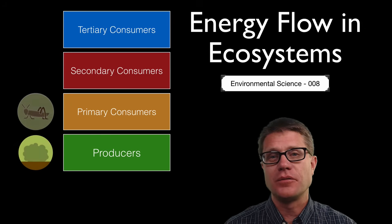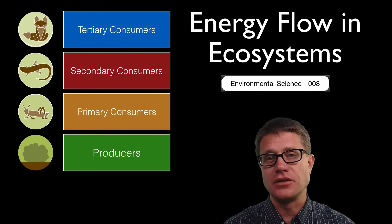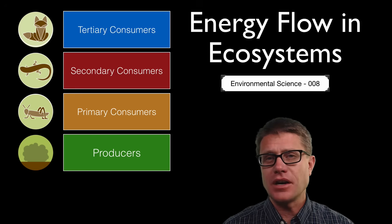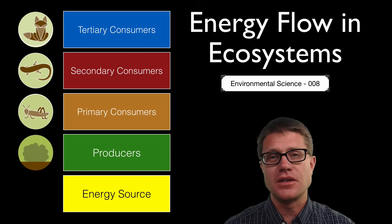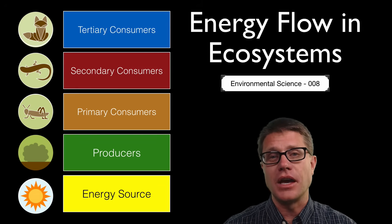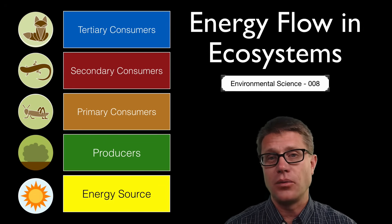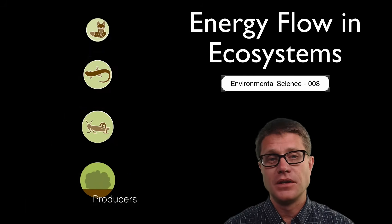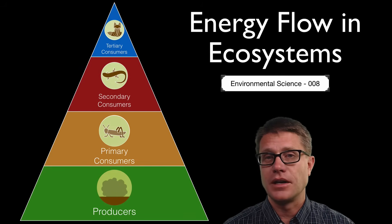In the last video we talked about the importance of producers producing food that is consumed by consumers. But we did not talk about where that energy comes from. What is the major energy source on our planet? It is going to be the sun. And this model also does not show that we are losing energy to heat at each step along the way. And so a better model is an ecological pyramid that looks like this.